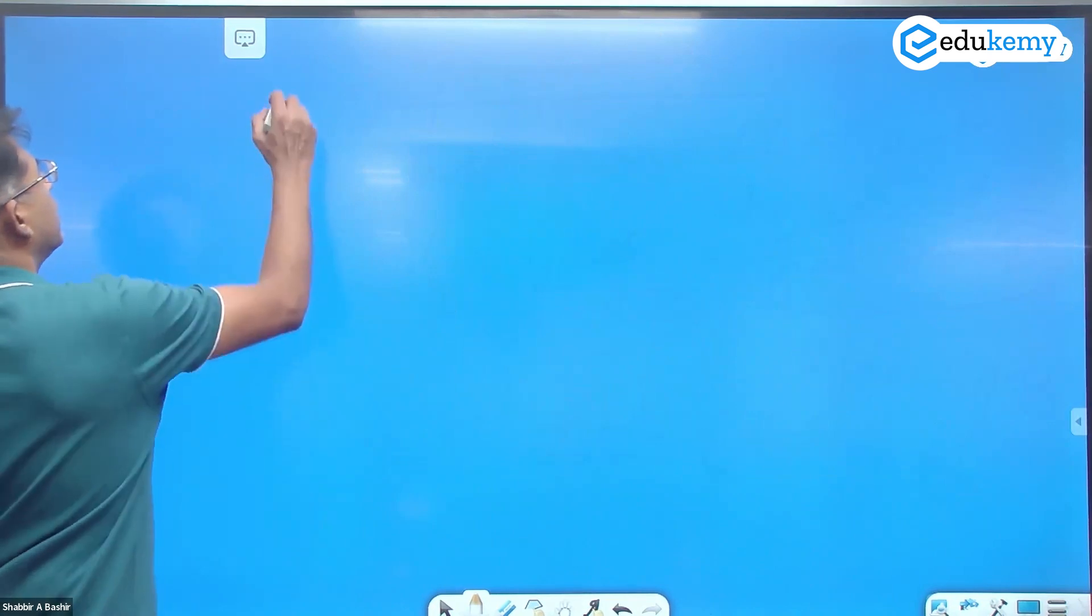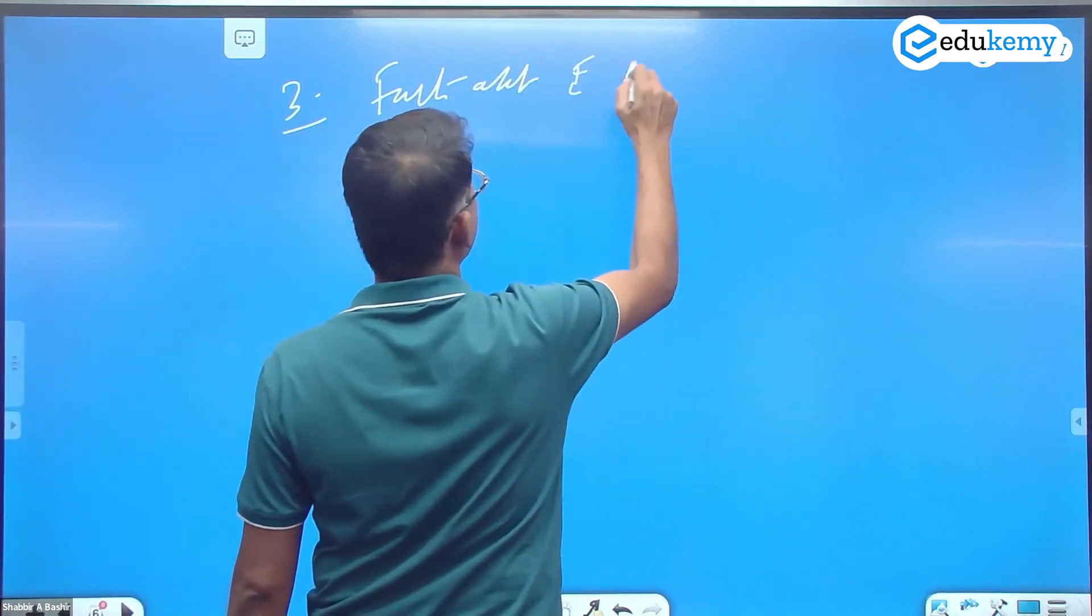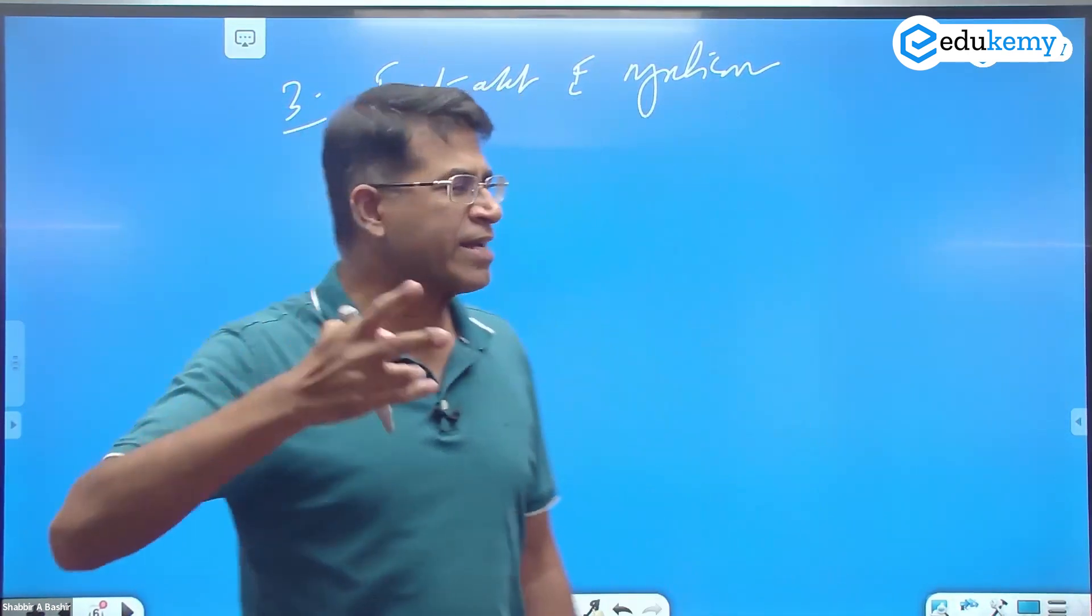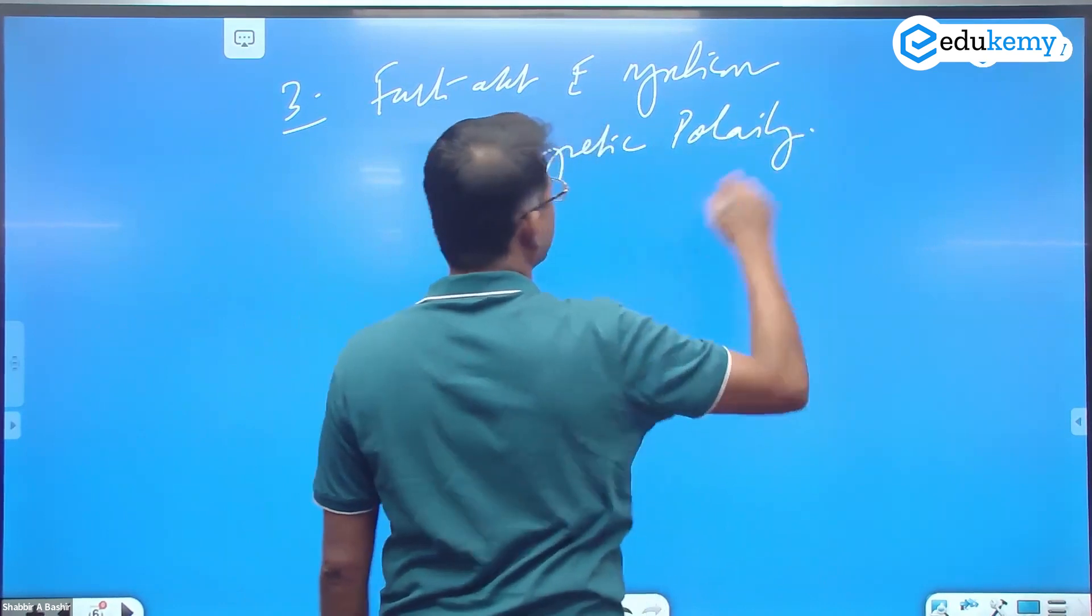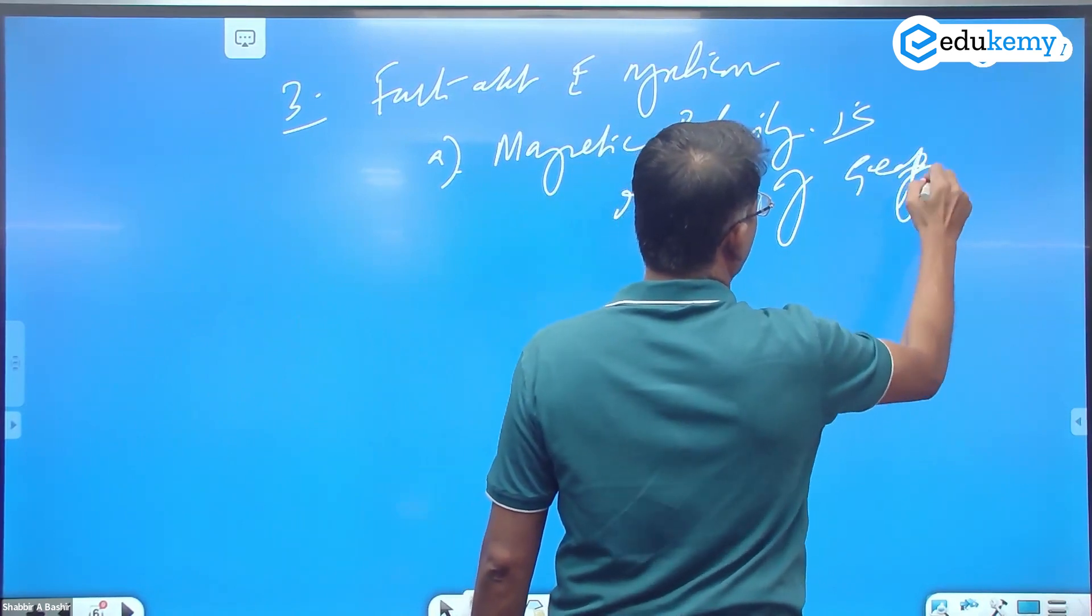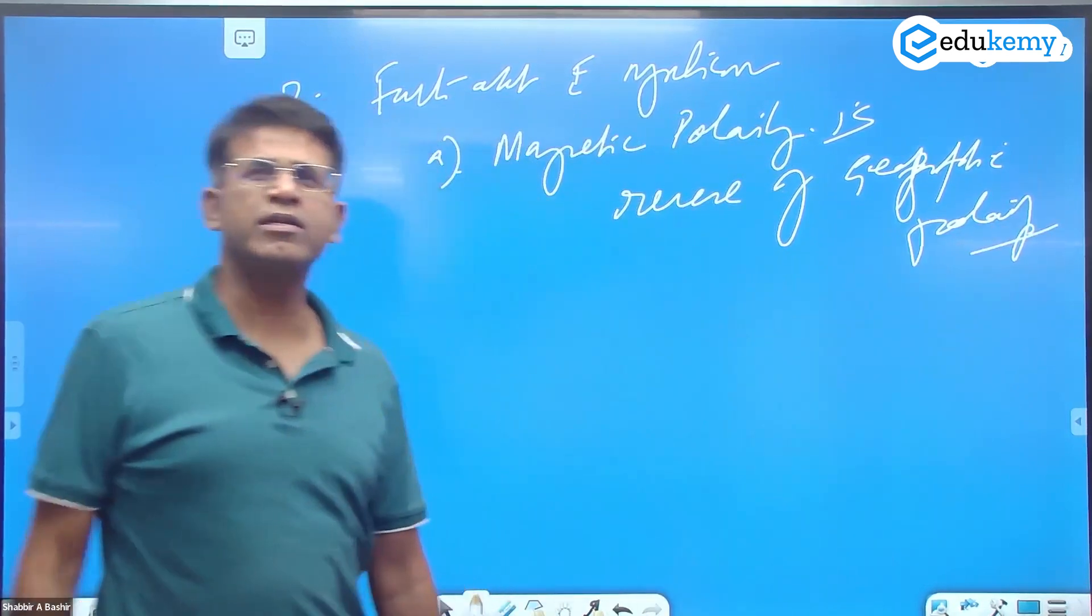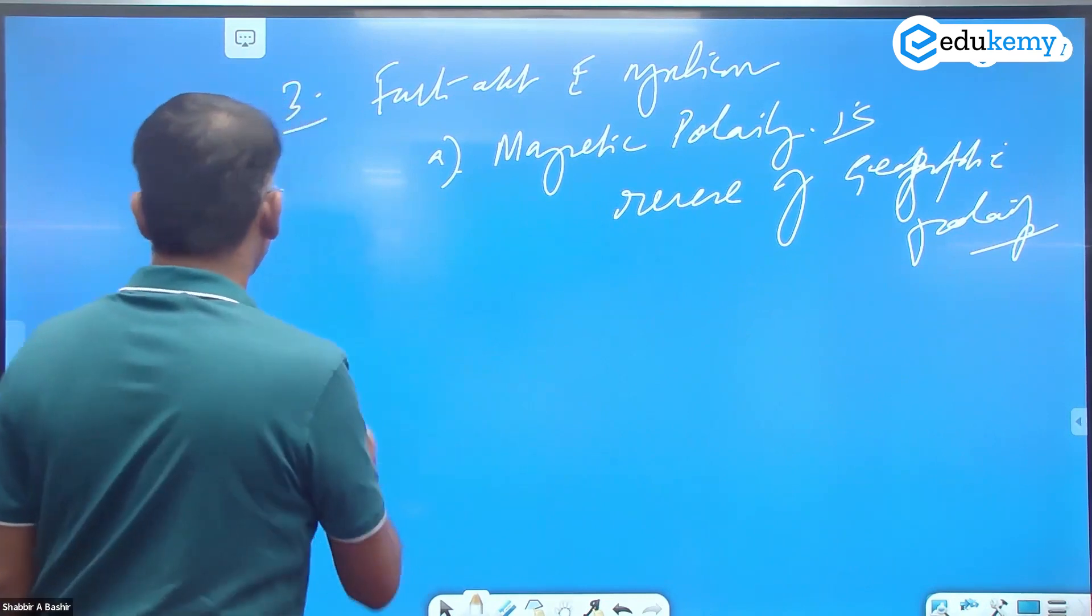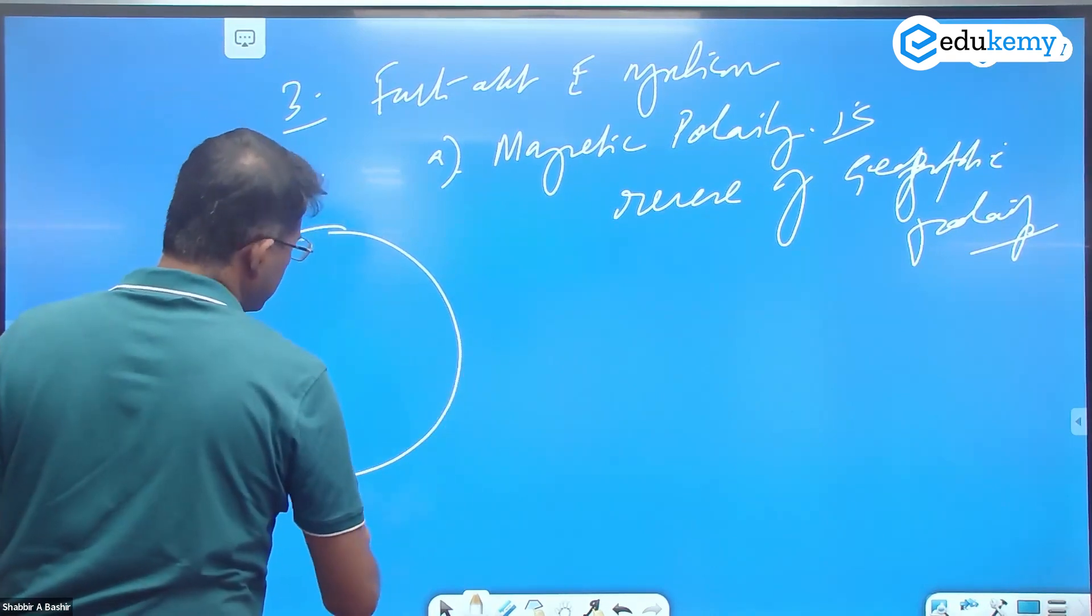The third thing - there are certain facts about Earth's magnetism. One fact is that Earth's magnetic polarity is reverse of Earth's geographic polarity. Earth has a geographic north pole and a geographic south pole.